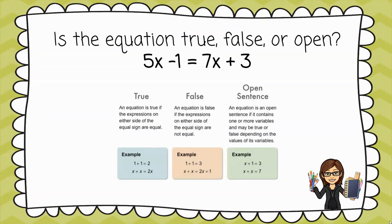Well, I can't say that 5x - 1 = 7x + 3 is true all the time because I don't know what x is. So let's look at false. False equations are equations where I know they are not equal.